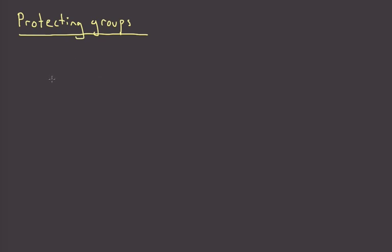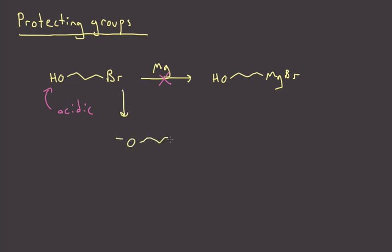For example, imagine that I have the following molecule, and for whatever reason, I need to make a Grignard reagent out of that alkyl bromide. I would be trying to make this Grignard reagent, but of course, this isn't possible. It's because that hydroxyl group is acidic. As soon as I might form any of the Grignard reagent, it would immediately deprotonate that hydroxyl group.